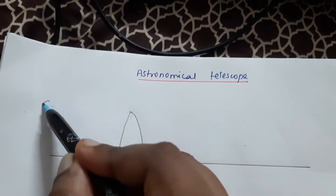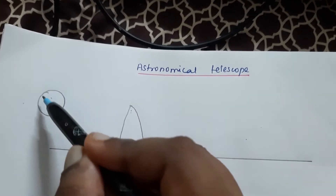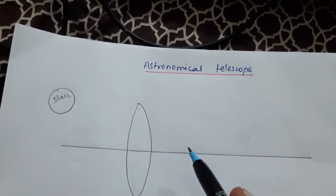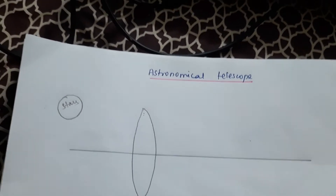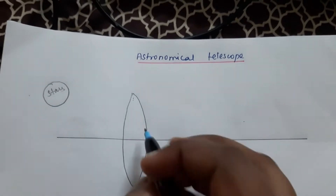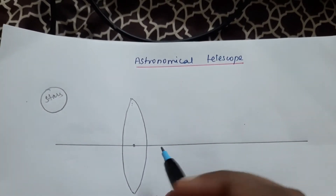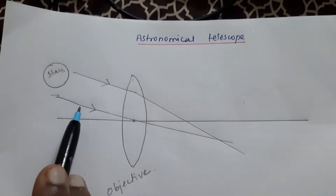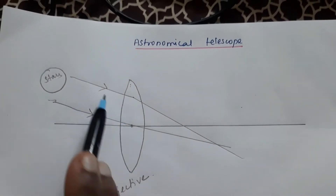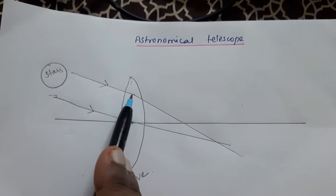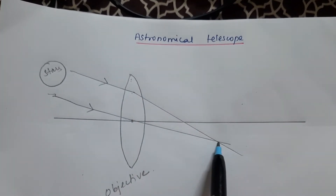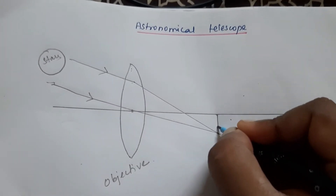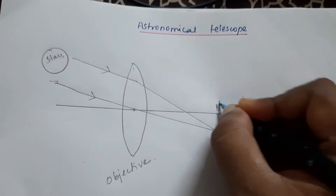Now I am going to consider this as a star. Rays from the star are passing through the objective — the rays are from infinity. There are two parallel rays coming from the star: one passing through the optical centre and another passing through another point on the objective, and these two are meeting at a point here, forming an image. This image I mark as B dash.